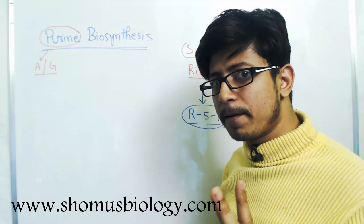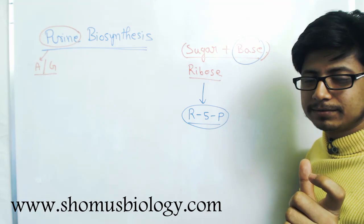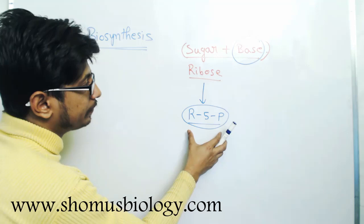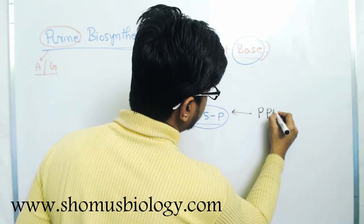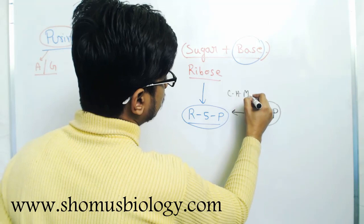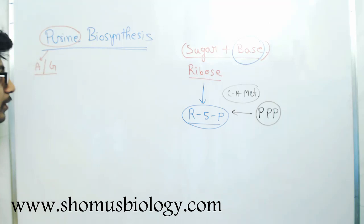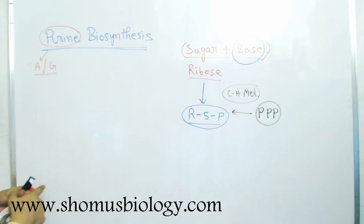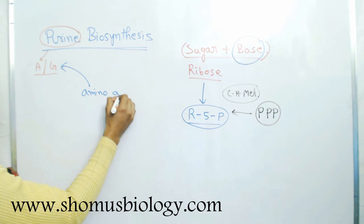Purine and pyrimidine biosynthesis in nucleotide metabolism depends on two different steps. One is the metabolic pathway associated with carbohydrates — the pentose phosphate pathway — because the activated form of ribose phosphate is produced from the pentose phosphate pathway, which is part of carbohydrate metabolism. The second part is the production of adenine and guanine, the actual purine bases, which requires different amino acids.